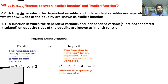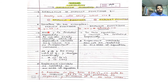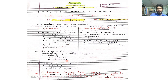एक और example देखते हैं। y is equal to 2x minus 3 — यहाँ पर y completely isolate हो चुका है एक side में। तो हम यहाँ पर easily identify कर सकते हैं कि dependent variable कौन सा है और independent variable कौन सा है। x हमारा independent variable है और y, x के ऊपर depend करने वाला है, इसलिए y हमारा dependent variable है। So dependent variable is isolated on one side of the equation and independent variable is isolated on another side.